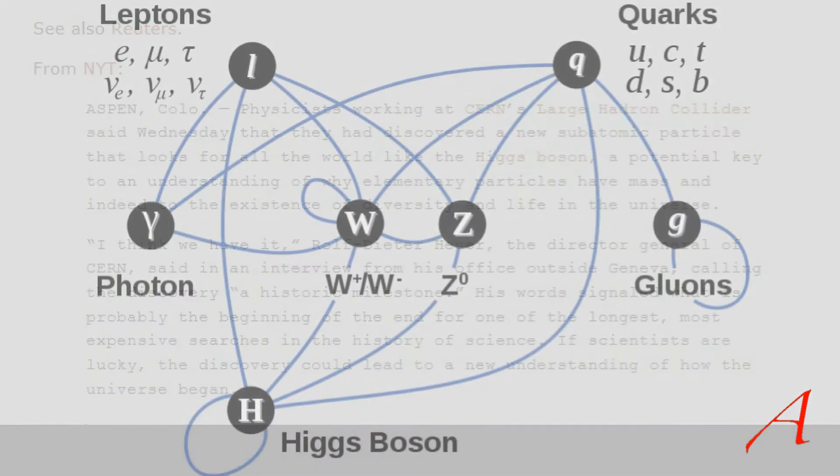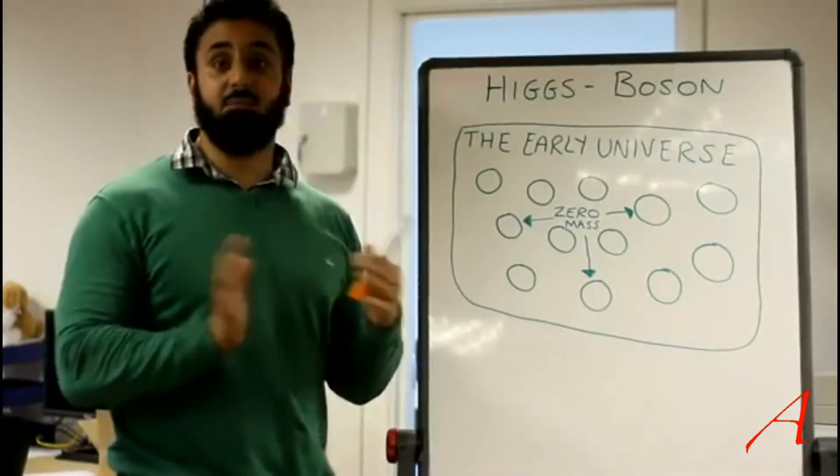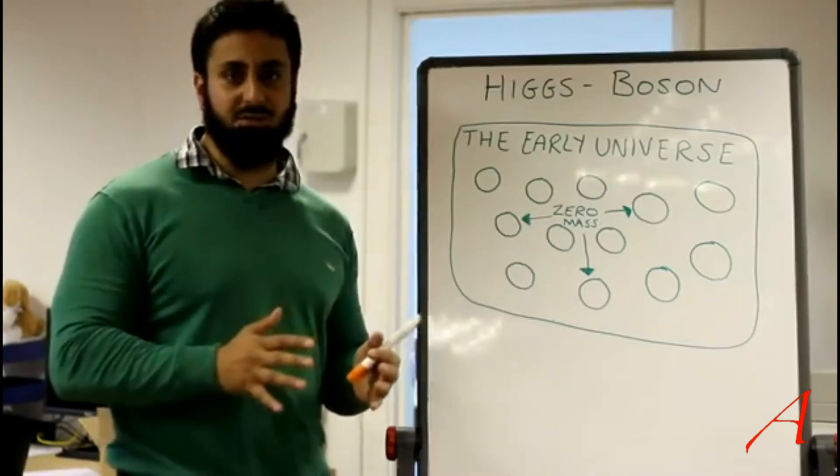Does Hamza have any clue what the standard model actually consists of? Does he have any idea how bosons differ? Could he explain why, if the Higgs mechanism provides particles with mass through interaction, why are photons, gluons, etc. excluded? Why does Hamza not explain the difference between a boson and a fermion?